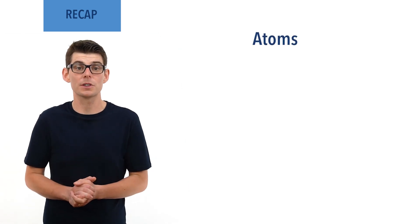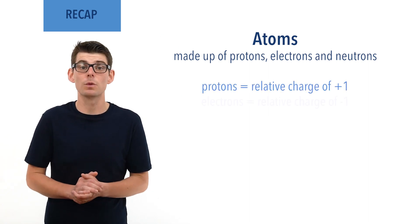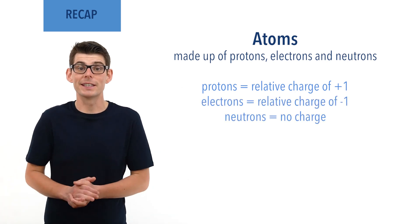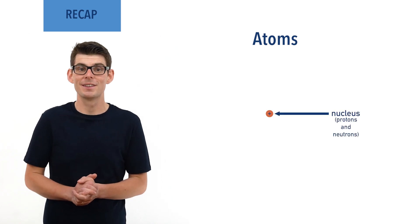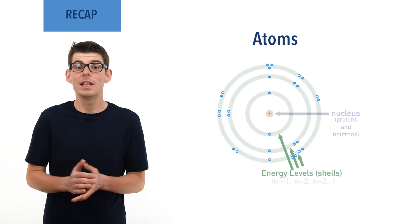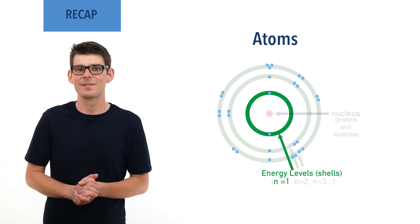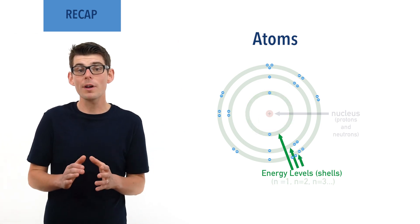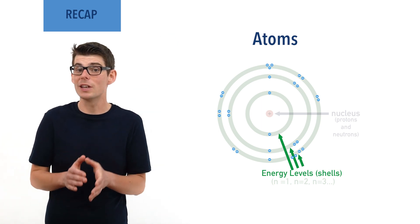Before we talk in detail about atomic orbitals, there are a few essential ideas you need to be comfortable with. Atoms are made up of three types of subatomic particle: protons, electrons and neutrons. Protons have a relative charge of positive one, electrons negative one, and neutrons have no charge. Inside an atom there is a very small dense region of positive charge made up of protons and neutrons called the nucleus. The nucleus is surrounded by negatively charged electrons that exist within specific energy levels or shells, labeled as principal quantum numbers, starting with the number one for the energy level closest to the nucleus. As you move away from the nucleus of an atom, more electrons can fit around it.